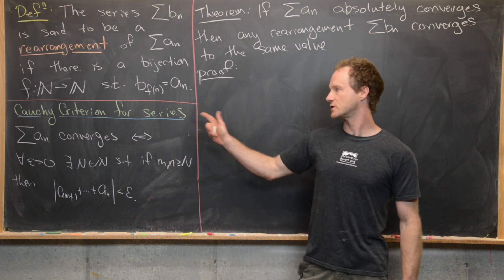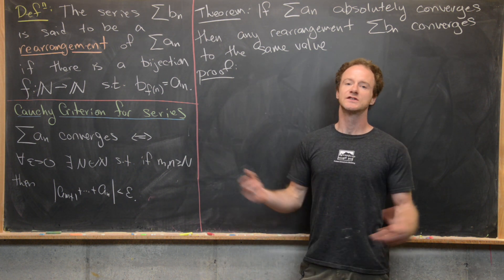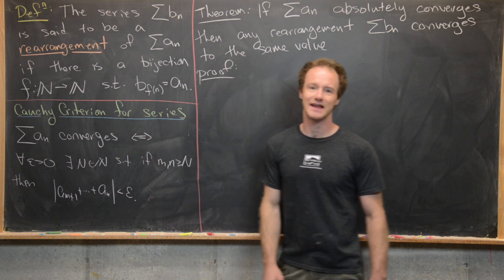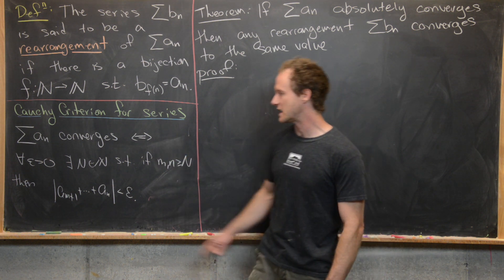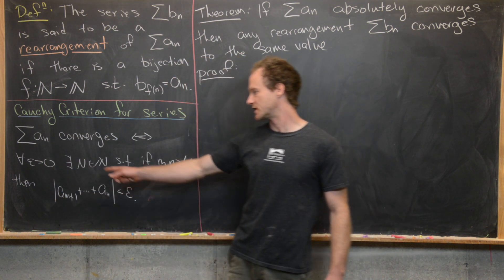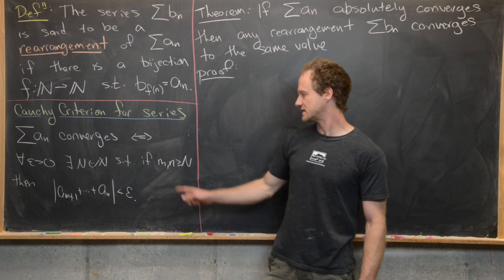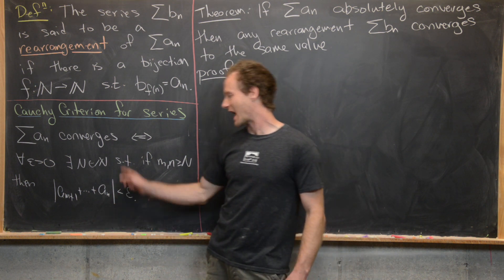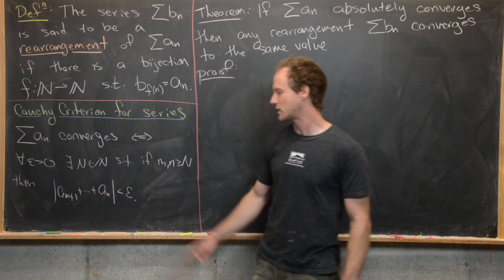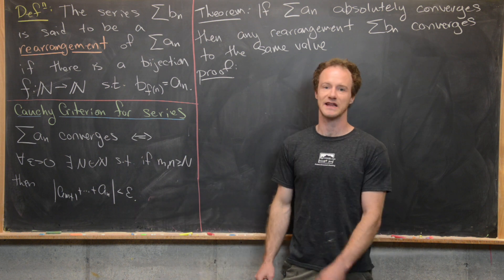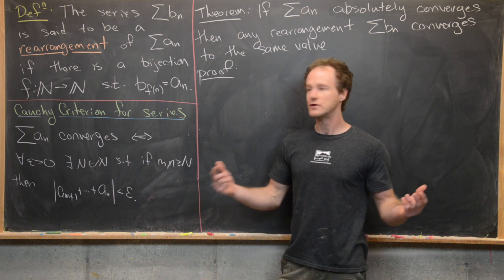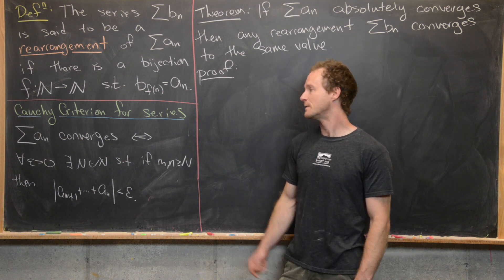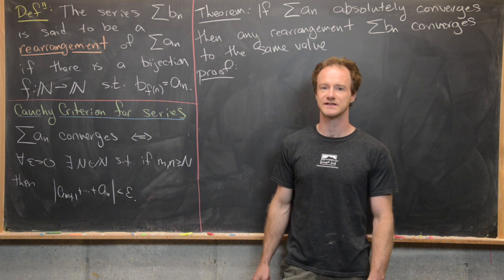We're going to prove this result using the Cauchy criterion, so let me recall that quickly. The series A_N converges if and only if for all epsilon greater than zero there exists a natural number N such that if M and N are both greater than or equal to that natural number, we have the absolute value of A sub M+1 plus all the way up to A sub N is less than epsilon. We've used this Cauchy criterion to prove some series convergence tests in a past video and now we're going to use it to prove this theorem as well.